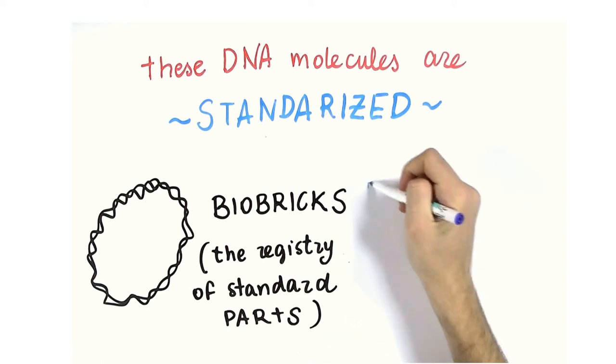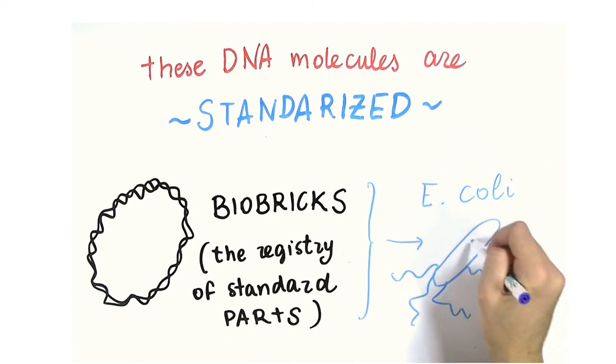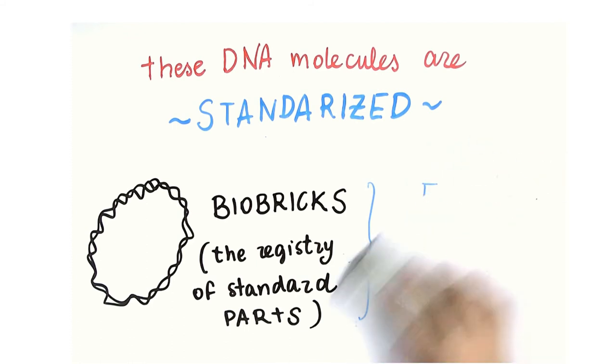The genetic circuits made from biobricks can then be assembled into living cells, such as E. coli, in order to make new biological systems which perform new functions.